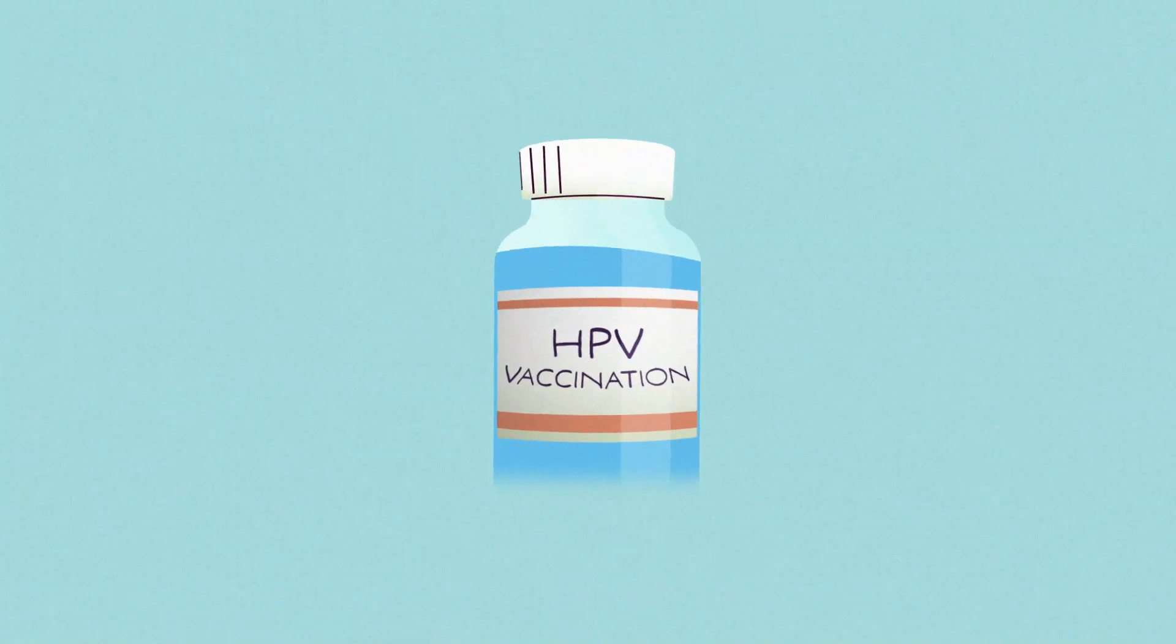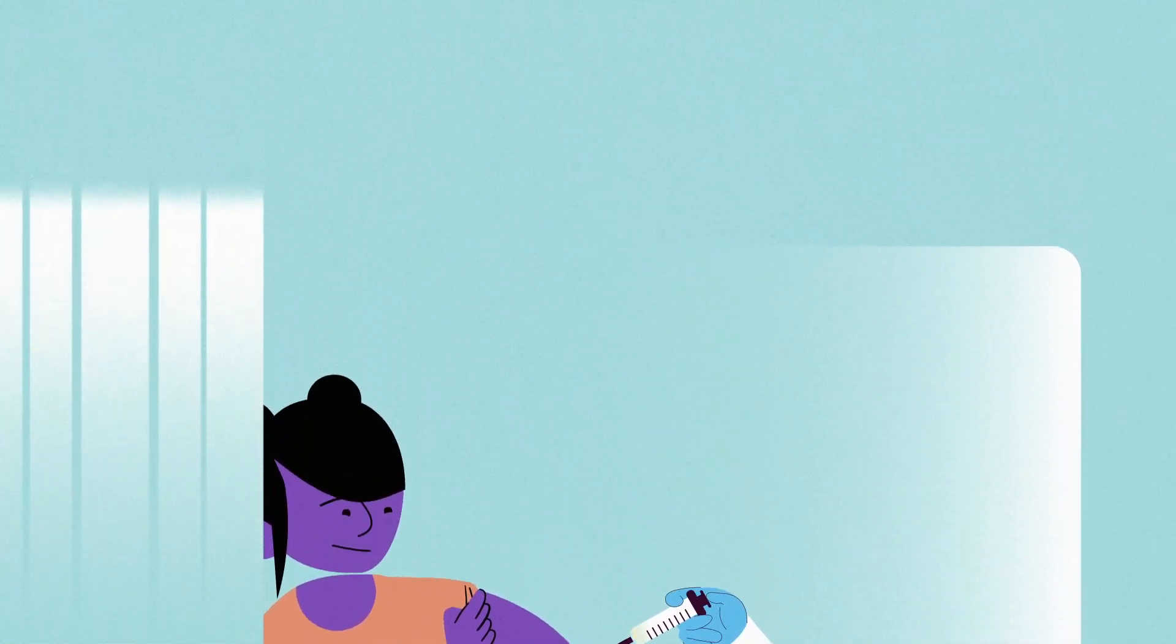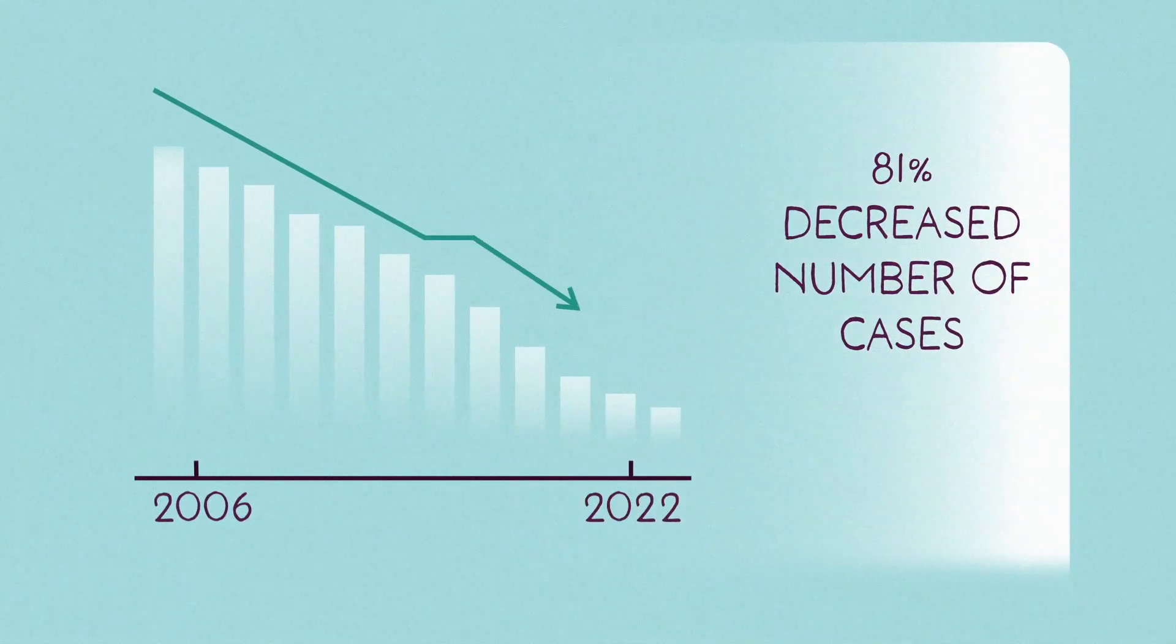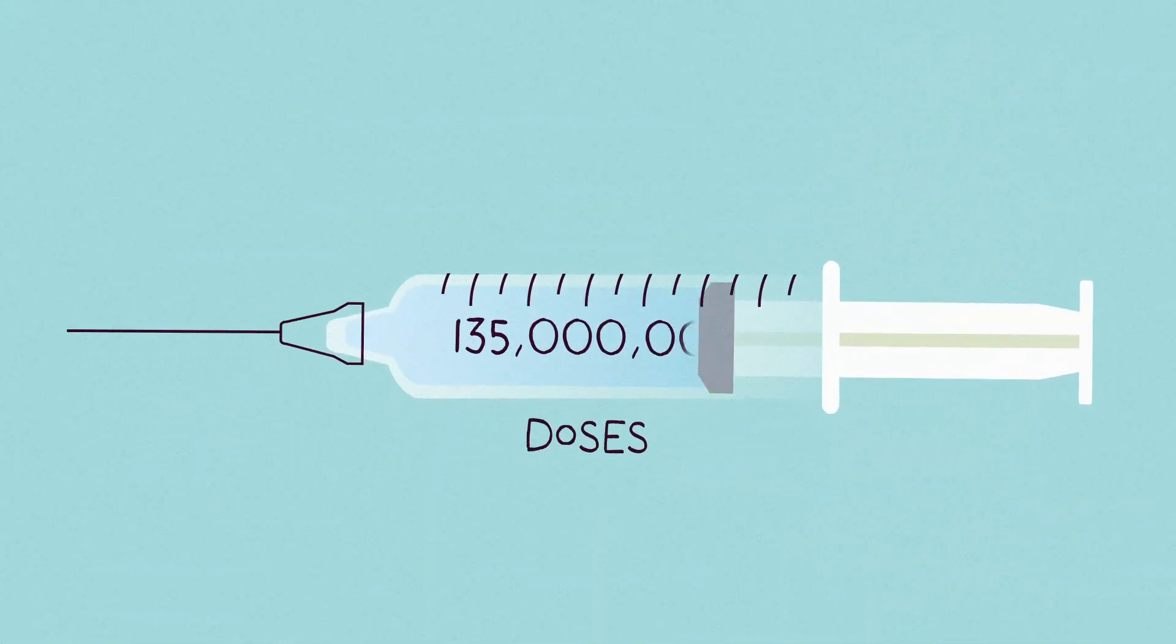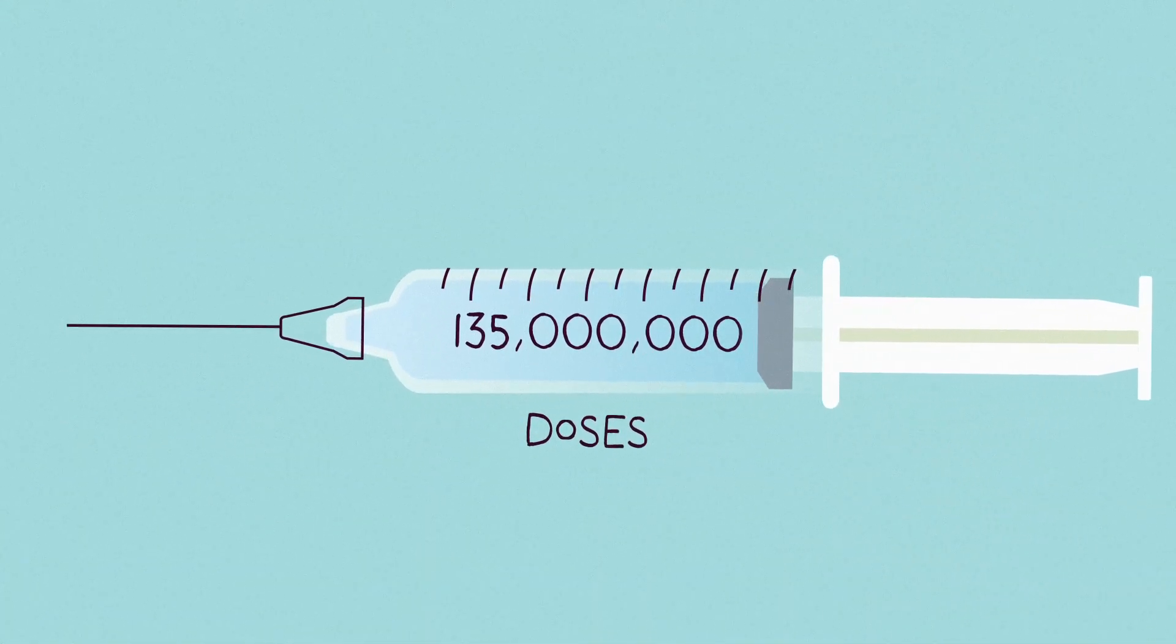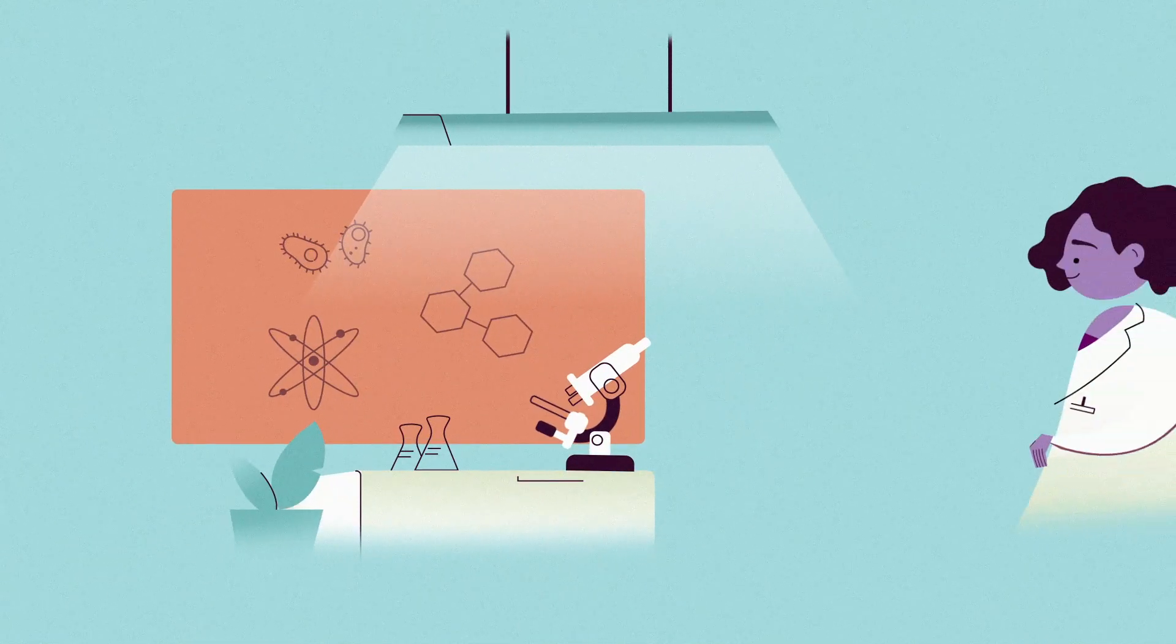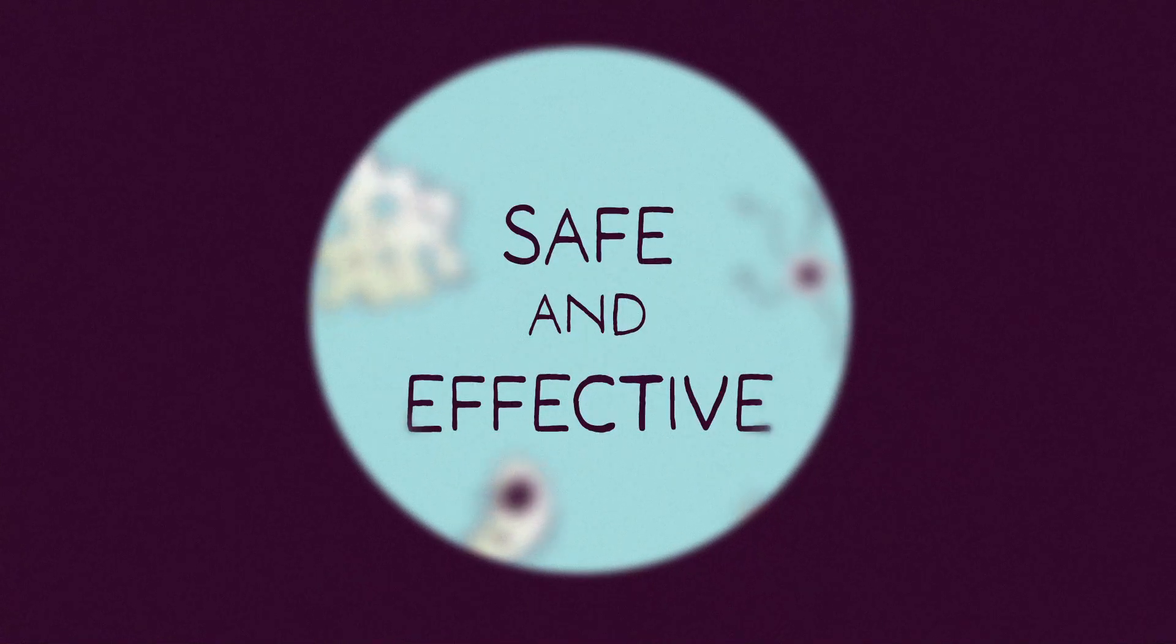The HPV vaccination prevents cancer-causing infections and pre-cancers, which have dropped since 2006 when HPV vaccines were first used in the United States. More than 135 million doses of HPV vaccines have been distributed since they were licensed, and over 15 years of monitoring have shown that HPV vaccines are very safe and effective.